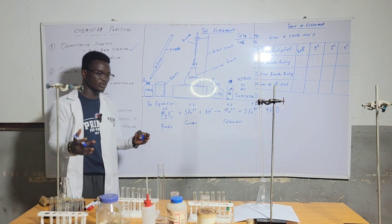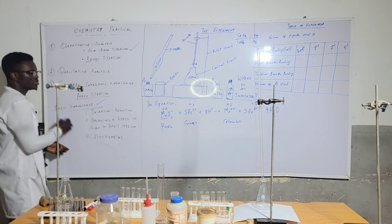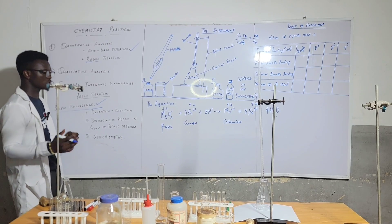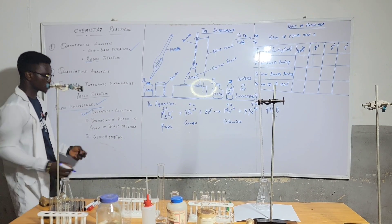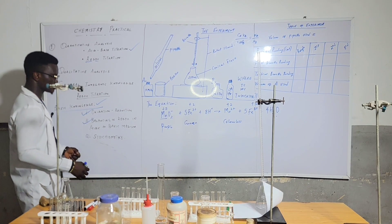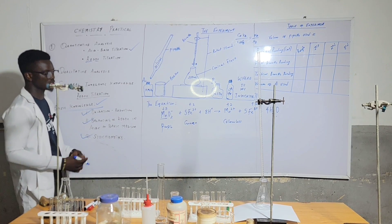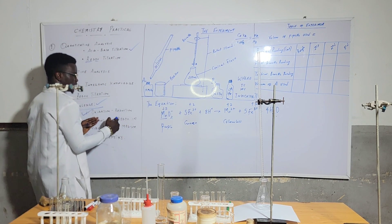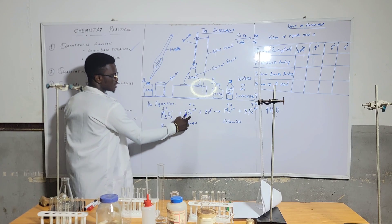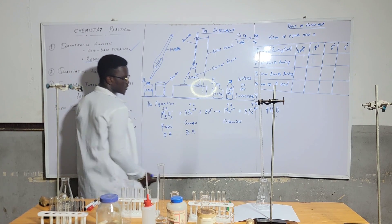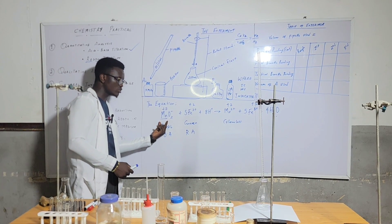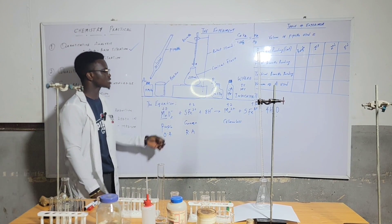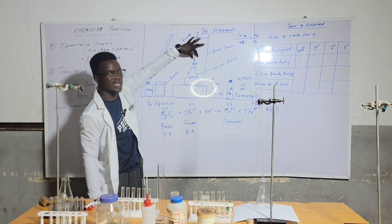I won't be using the terms 'reducing' and 'oxidizing' too much to avoid confusion, but you need to know what oxidation and reduction are, how to balance a redox equation in acidic or basic medium, and some basic stoichiometry techniques. From the balanced equation I have here, KMnO4 is the oxidizing agent and FeSO4 is the reducing agent. By the time I start mixing them, the color will start changing to colorless.